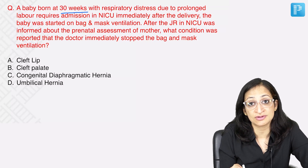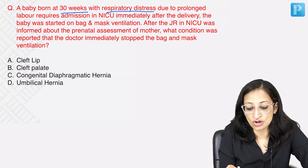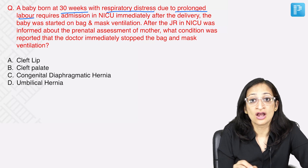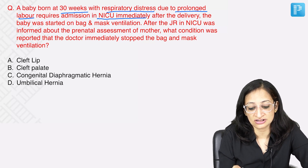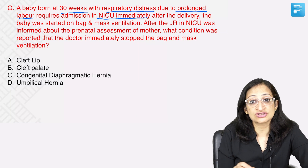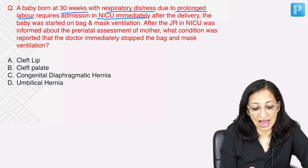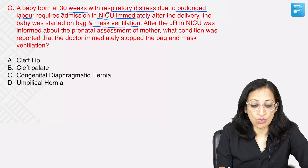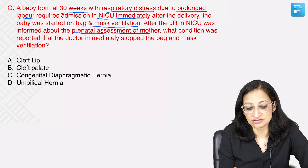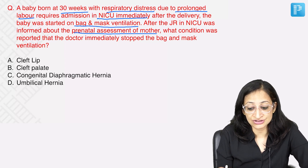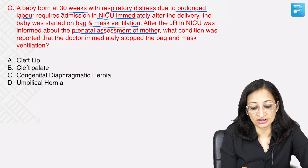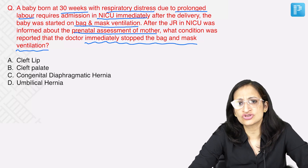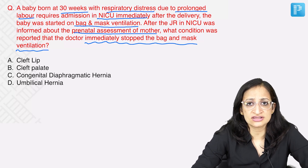What we have here is a baby born at 30 weeks gestation with respiratory distress due to prolonged labor. There is respiratory distress in this preterm baby who was admitted in NICU immediately after delivery. The baby was started on bag and mask ventilation, and after the junior resident in NICU was informed about the prenatal assessment of the mother, what condition was reported that the doctor immediately stopped the bag and mask ventilation?